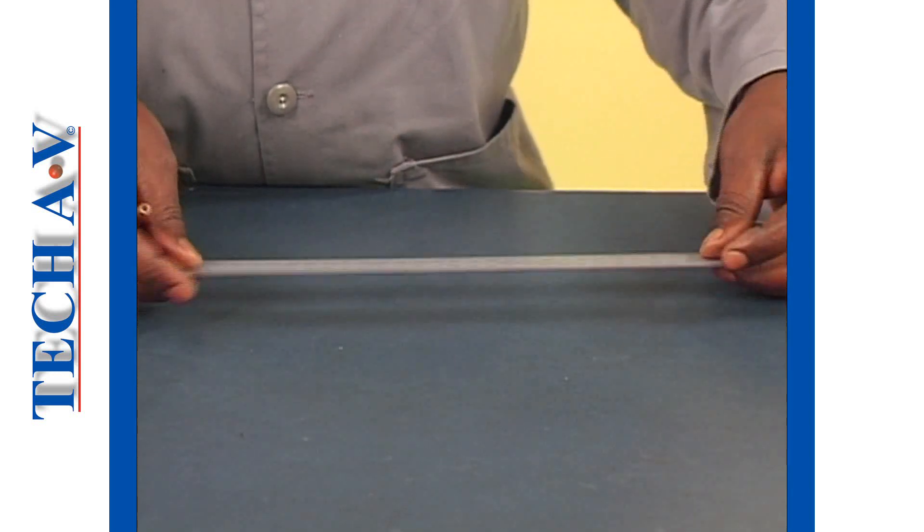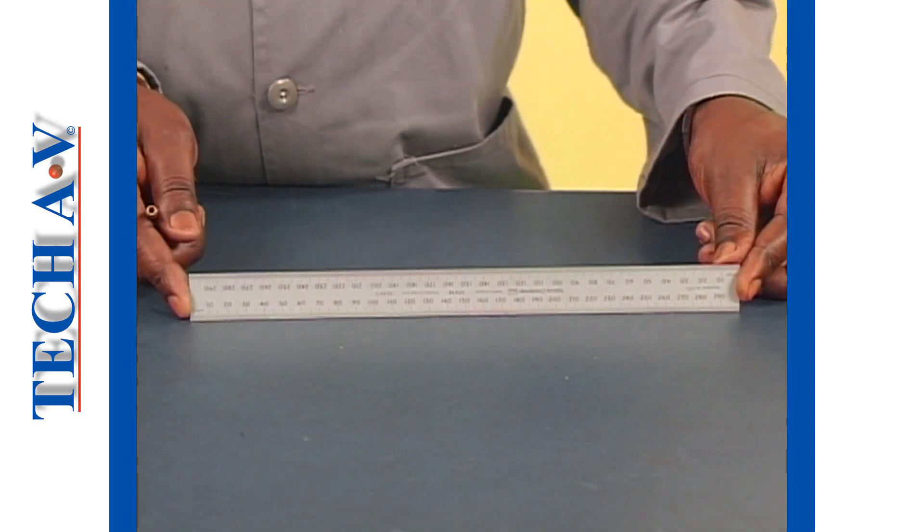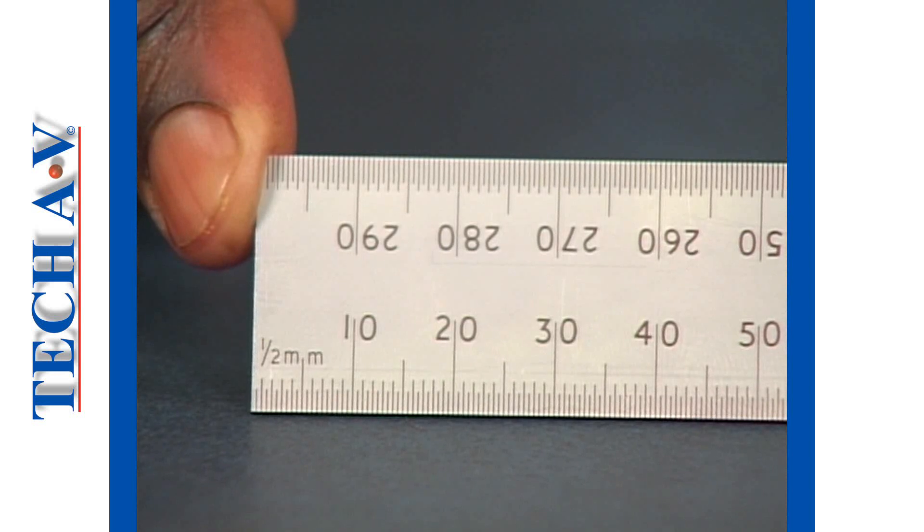Let's turn our rule over now and look at the half millimeters. A half millimeter is very small and, to the human eye, it is about the smallest reading that we can see with any accuracy.